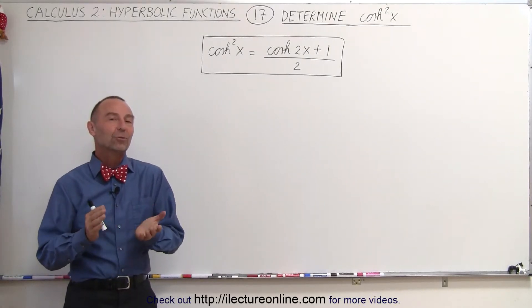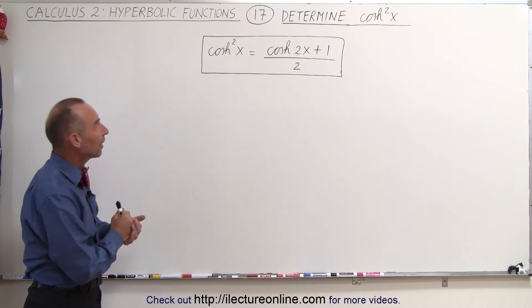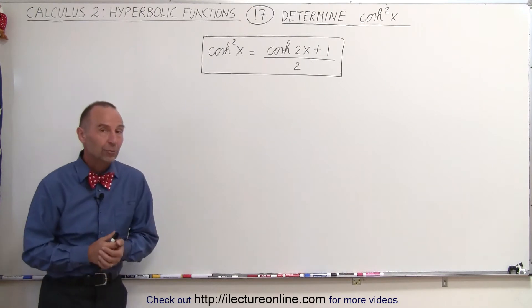Welcome to my lecture online. Next we're going to show that the hyperbolic cosine squared of x is equal to the hyperbolic cosine of 2x plus 1, all divided by 2.